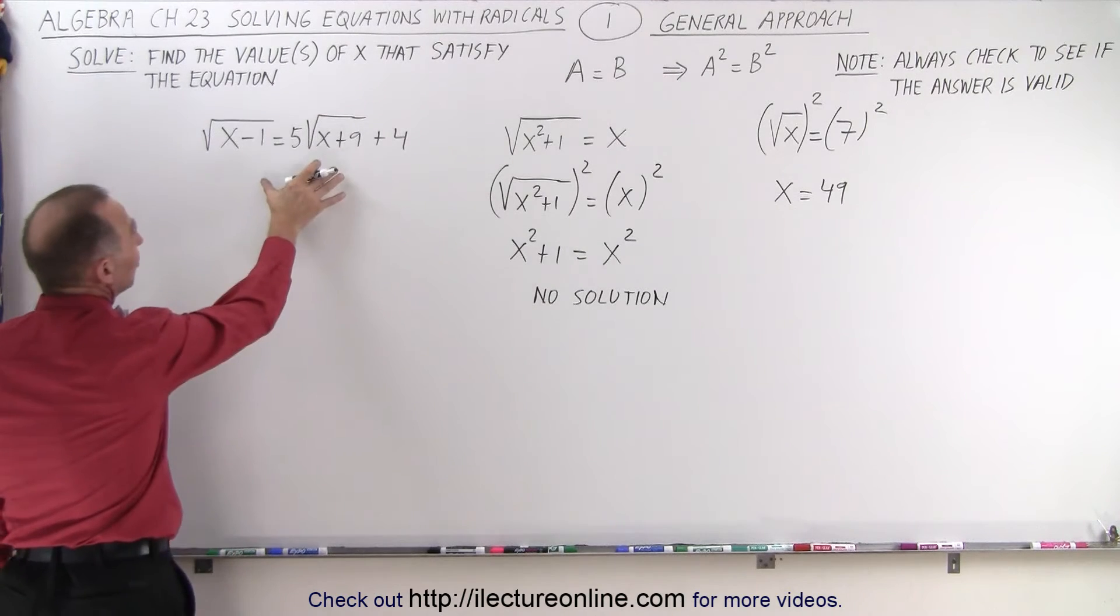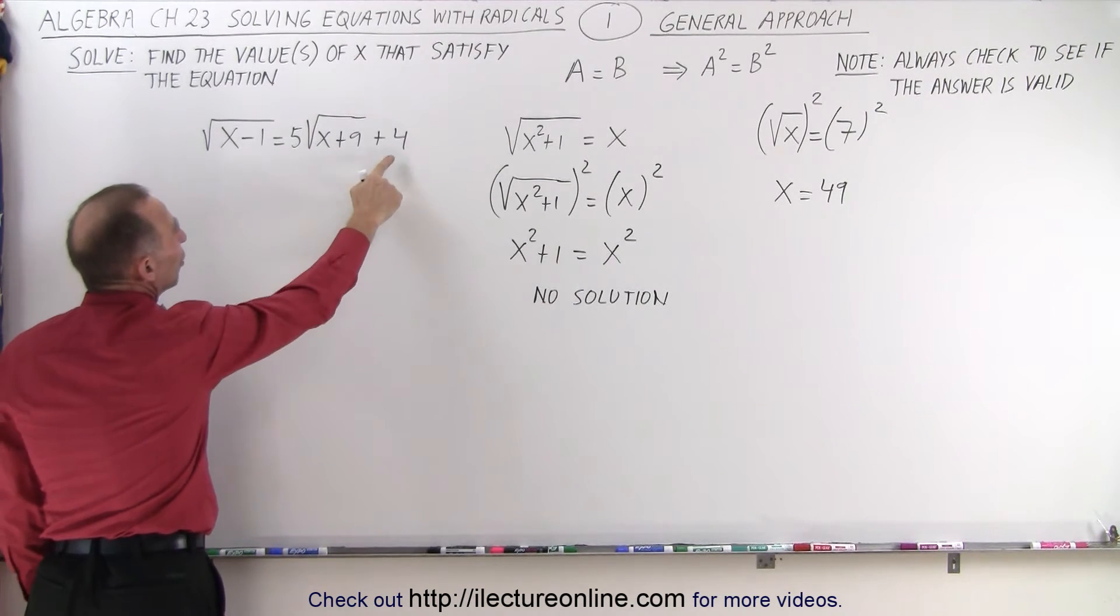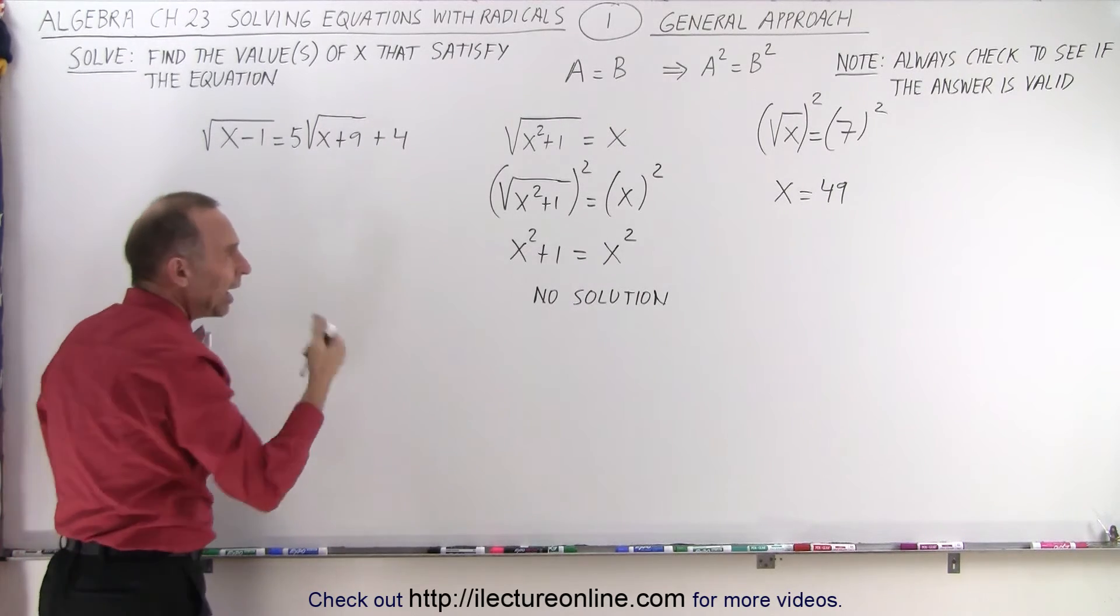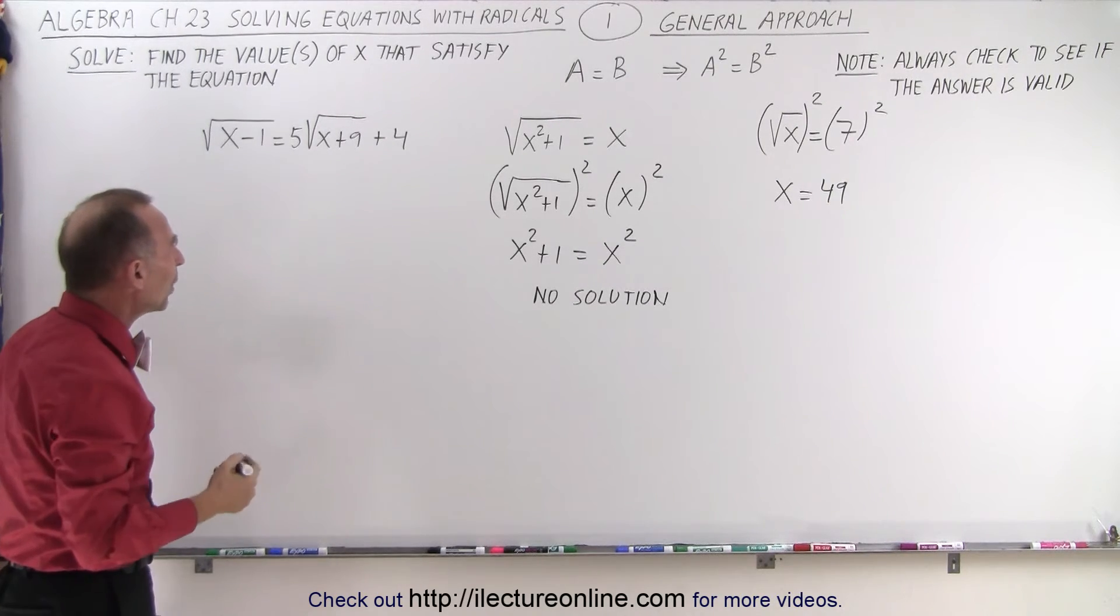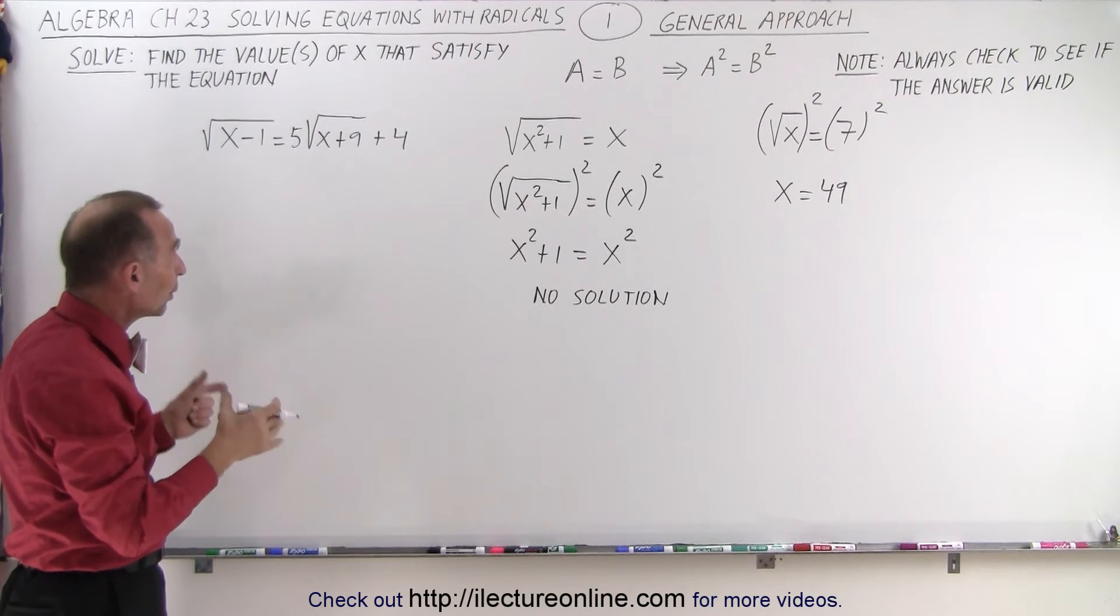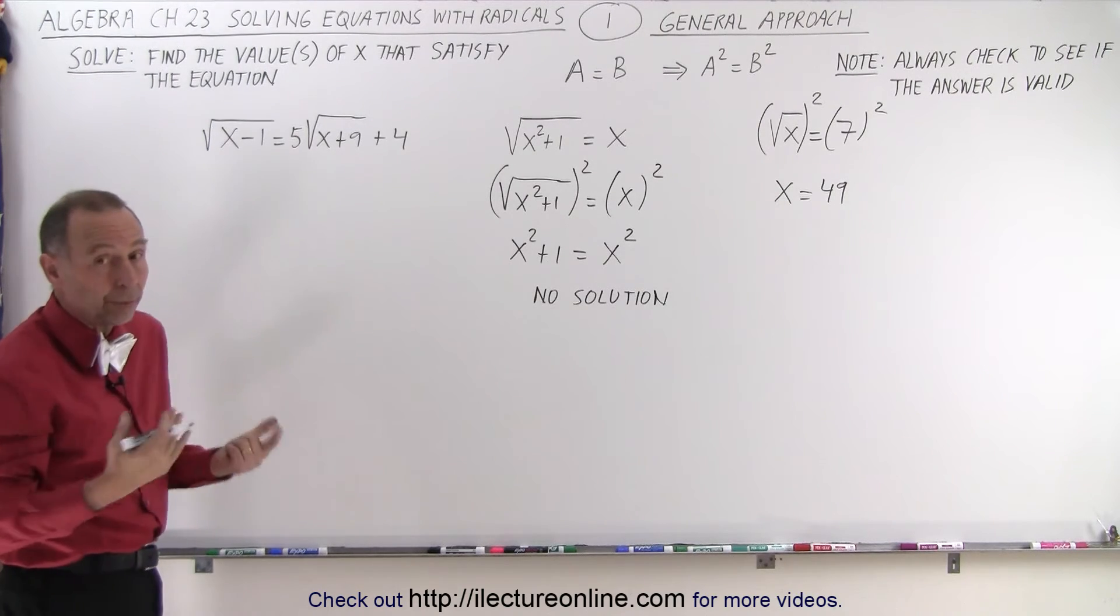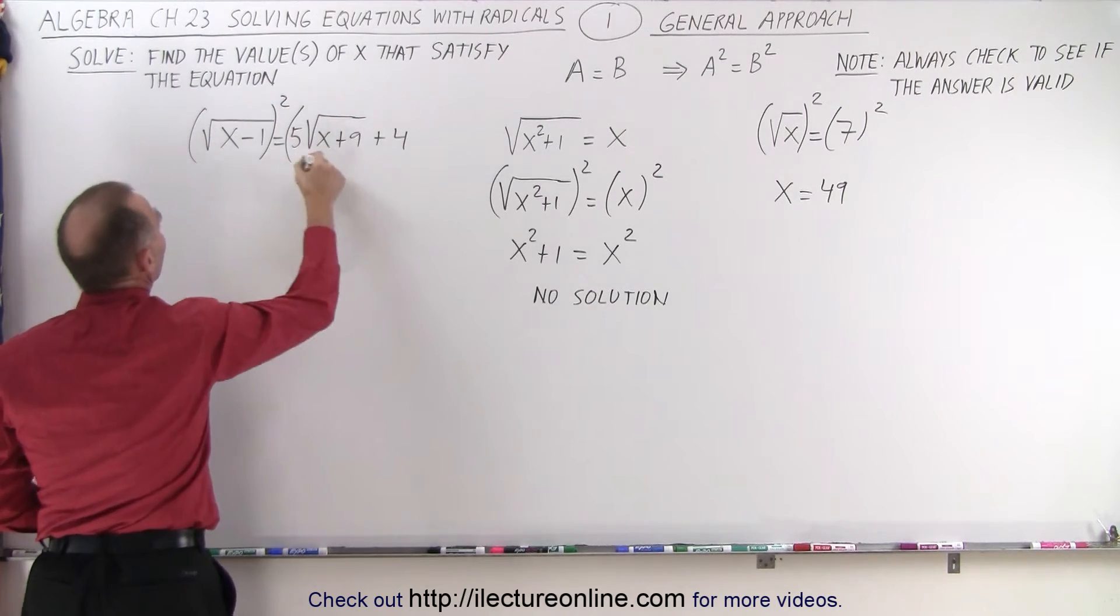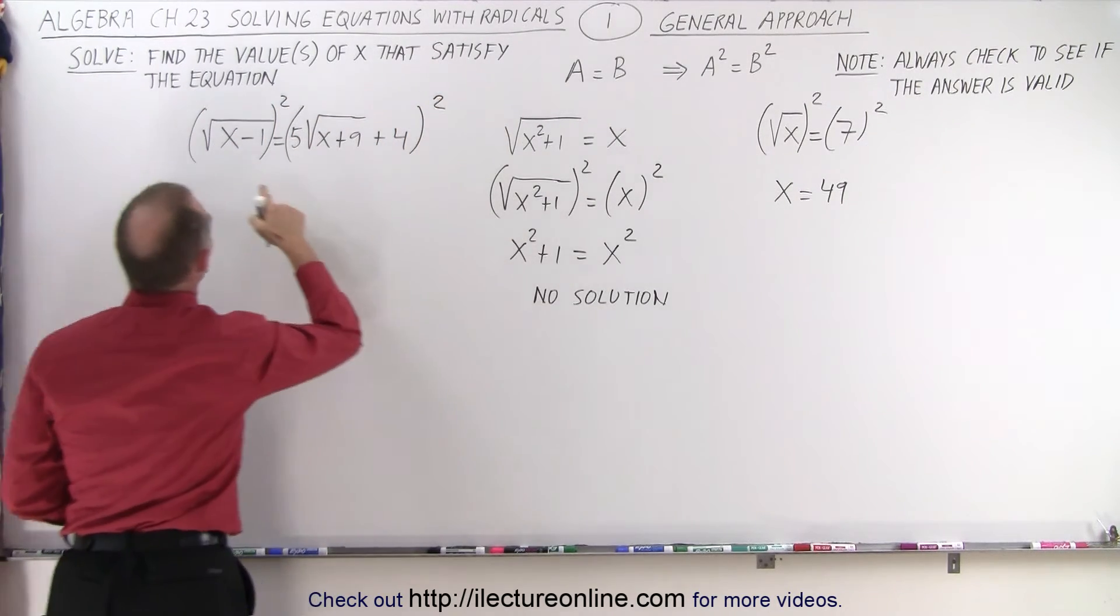When we get something like this, notice we have a number here and two radicals. How do we deal with that? In this case, we could simply square both sides like we did before. Let's see what happens. We square the left side and square the right side.